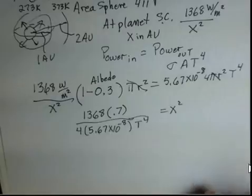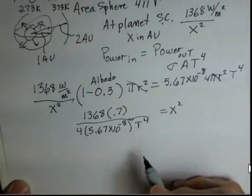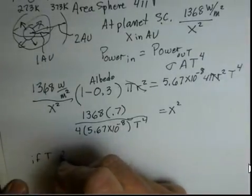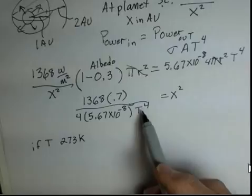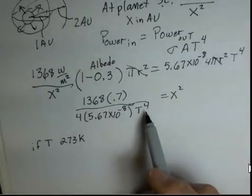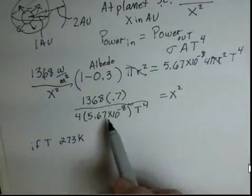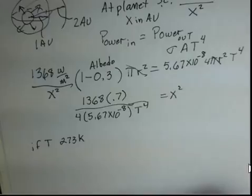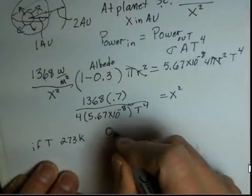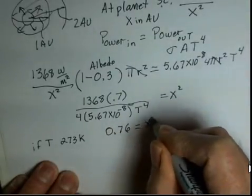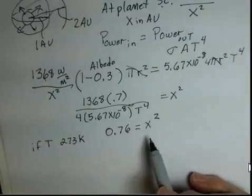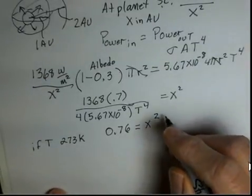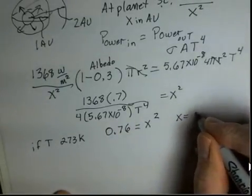It's time for calculations. For the case of the freezing point of water, if T is 273 Kelvin, you should pause now and go ahead and put in 273. T to the fourth is the same as T squared times T squared, so take 273, square it twice, multiply across this denominator, get the number for the numerator. I came up with a value of 0.76, and I'm rounding.